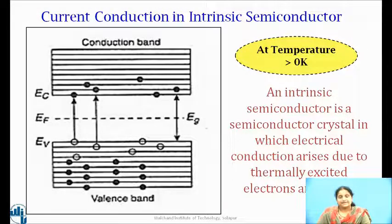The bandgap energy is the minimum energy required for breaking of a covalent bond. And this bandgap energy for germanium crystal, its value is 0.72 electron volt and for silicon crystal, the value is 1.12 electron volt.